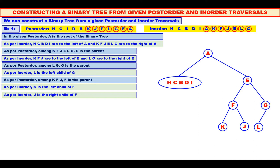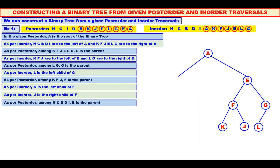Now the right subtree is completely over. Let us come to the left subtree. Among H, C, B, D, I, which is the parent, which is the root? See the post-order — B. Therefore, B is the root. We will make B as the root and we will mark B in the inorder.